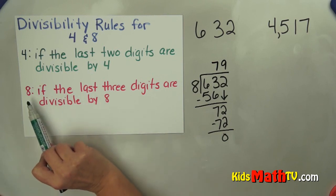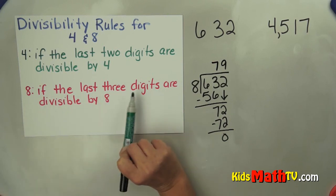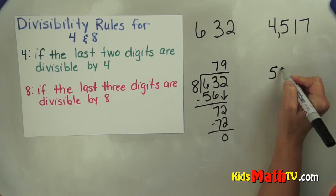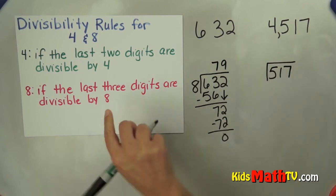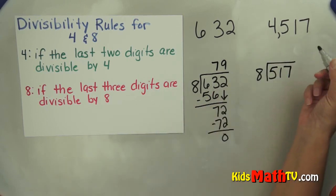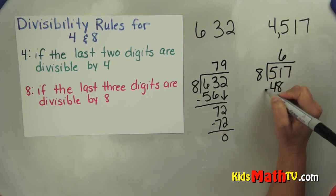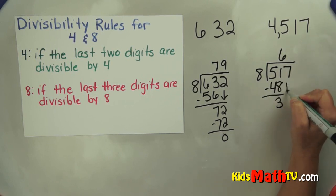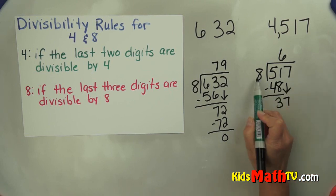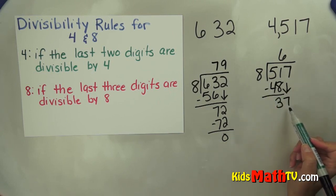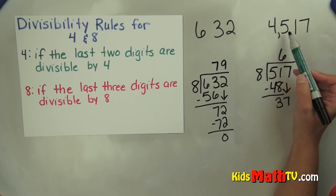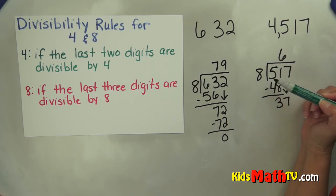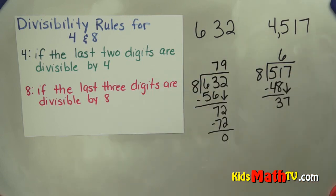Now let's check if 4517 is divisible by 8. We check the last 3 digits: 517. 8 goes into 51 six times — that's 48. Subtract and we get 3, bring down 8. 8 does not divide into 37 evenly. So 4517 is not divisible by 8 or by 4. That's the end of this lesson on the divisibility rules for 4 and 8.